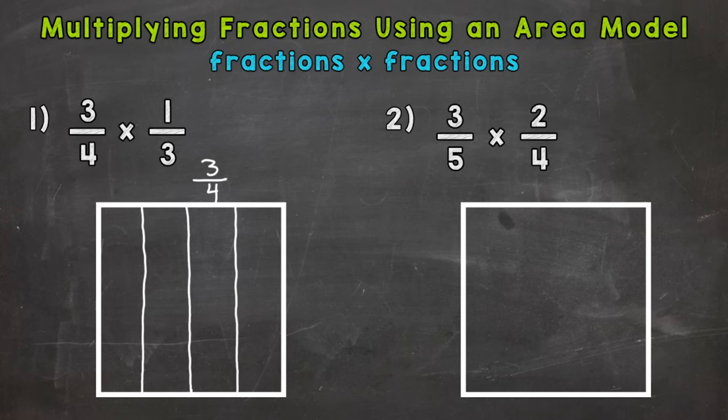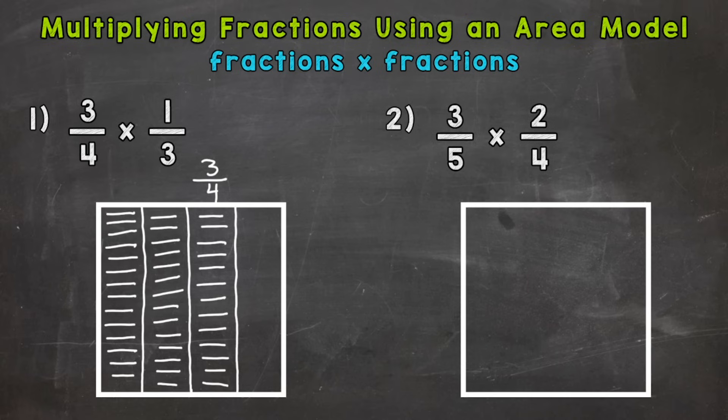So we have fourths there. Now we need to fill in three of them to represent that three-fourths. And I'm going to use horizontal lines. And you'll see why here in a second when we do one-third. And while I fill this in, you can use two colors. So one color for three-fourths and then one color for one-third. That way you can tell the difference between the two easily. I'm just going to use different types of lines. Either works.